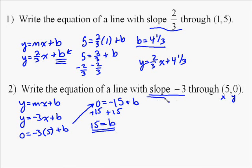So y-intercept is 15, slope is negative 3, so our answer is y equals negative 3x plus 15.